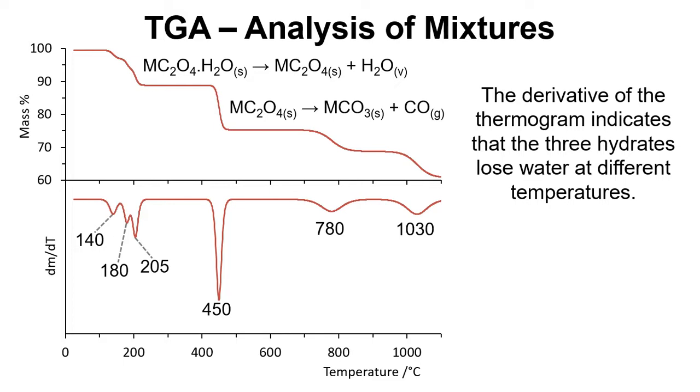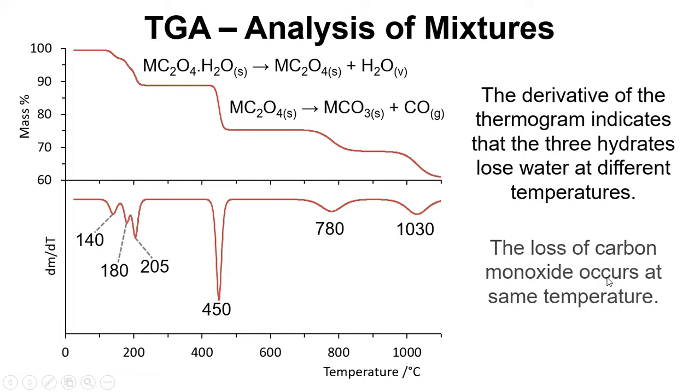So that suggests that the calcium, strontium and barium are losing their water at different stages, whereas we've got this very sharp peak here suggesting that all three oxalates are losing their carbon monoxide in one stage. So that is an application of looking at the derivative curve just to sort of really tease out nuanced details of the thermal decomposition of our material.